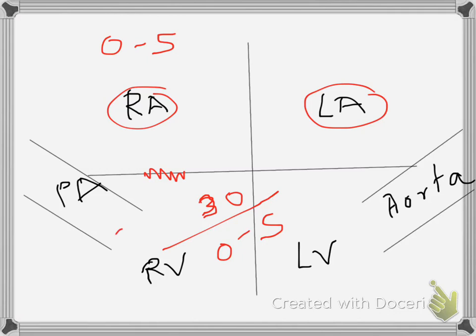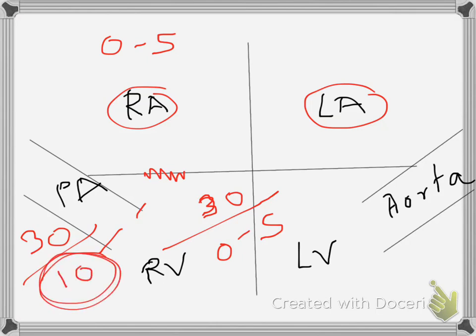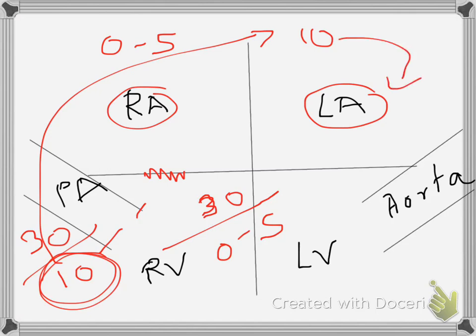During systole, the pulmonic valve opens and the right ventricle systolic pressure equalizes the systolic pressure in the pulmonary artery, which is 30. During diastole, however, the pulmonic valve closes and the diastolic pressure in the pulmonary artery becomes 10. When we measure the wedge pressure, we are putting a Swan through the pulmonary artery into one of its branches and trying to estimate the wedge pressure, which is almost equal to the pulmonary artery diastolic pressure, which is then equal to the left atrial pressure.